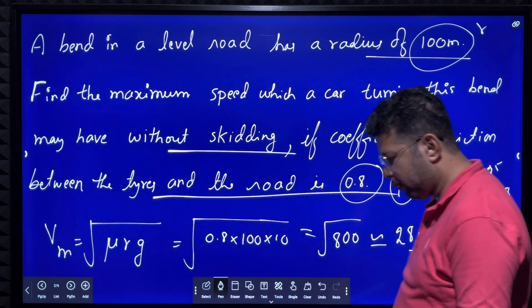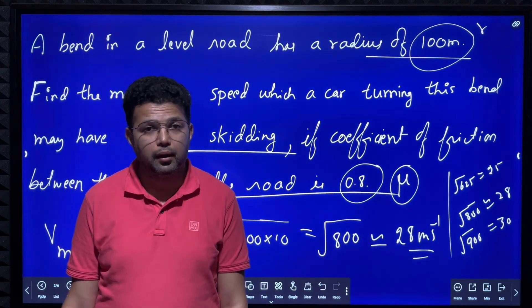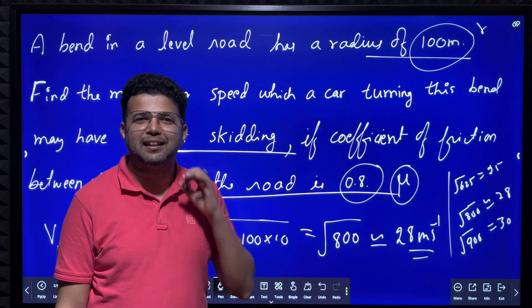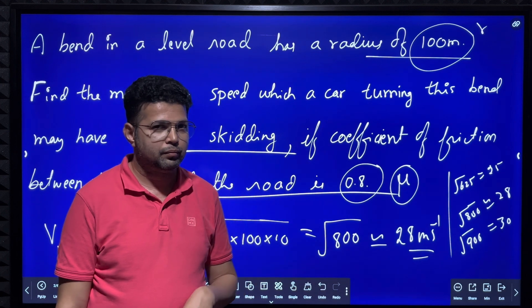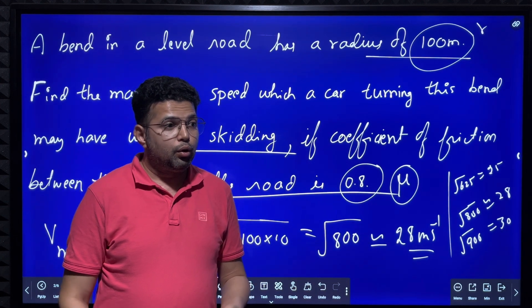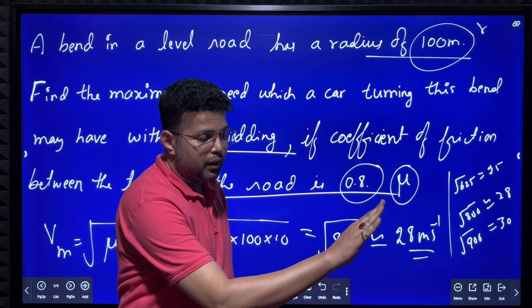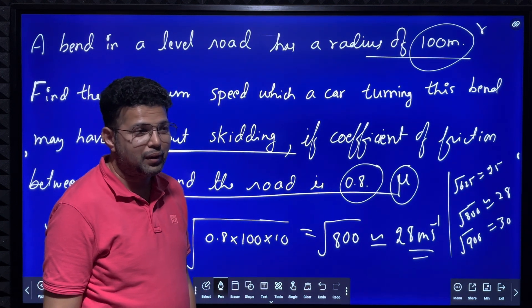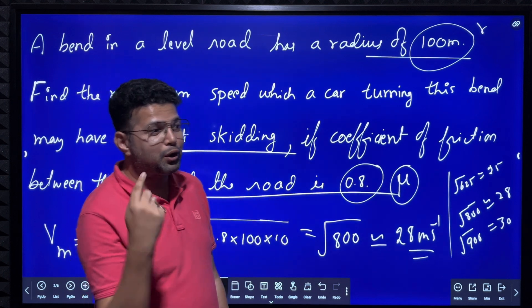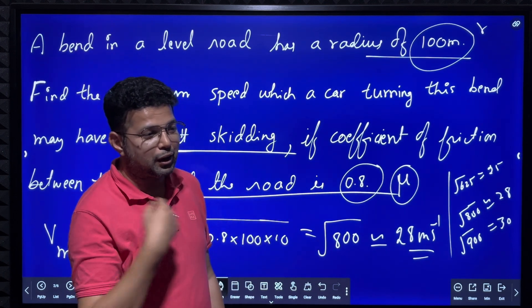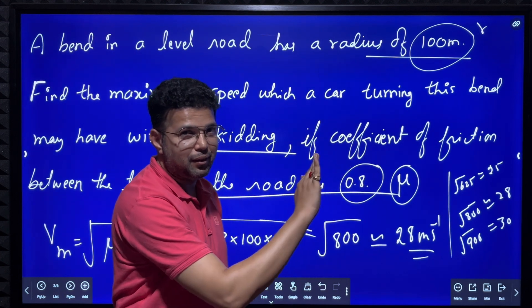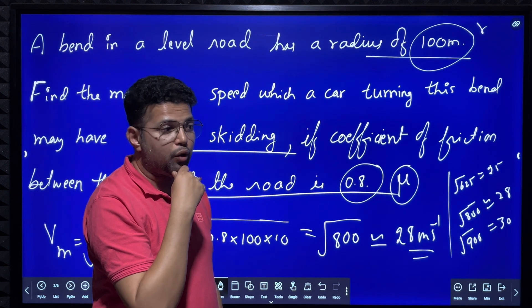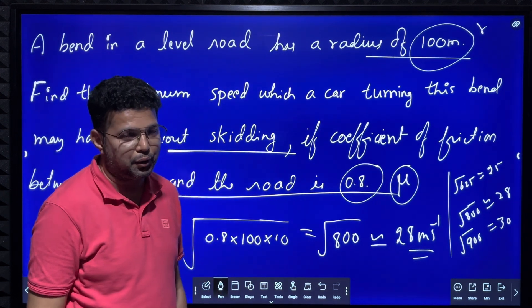Hope you understood the problem and the derivation. The takeaway is: if you want to take a turn on a level road, friction is necessary. In the next class, we will calculate maximum safe speed on a banked road. In a circus, you might have seen motorcycles moving in circles on a banked road without a concrete surface — we will see how that is possible without friction in the next lecture. Thank you very much.